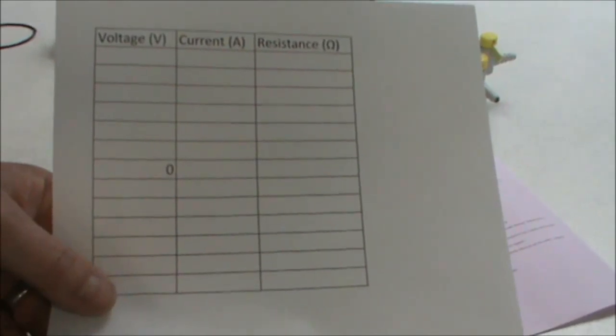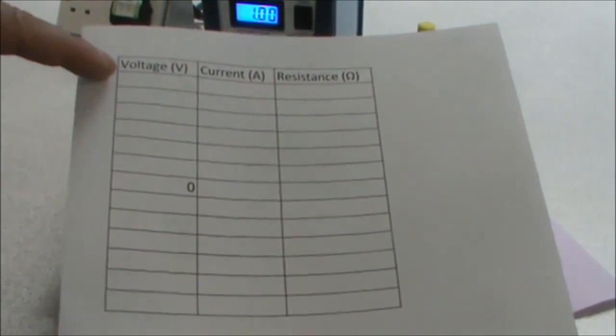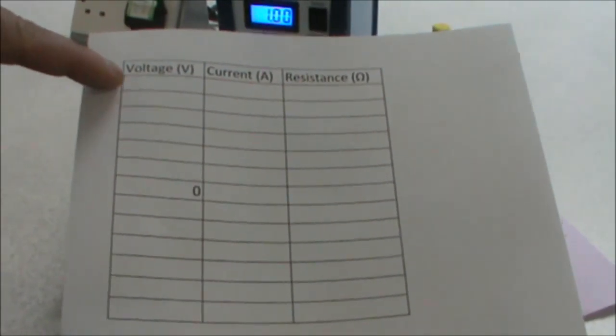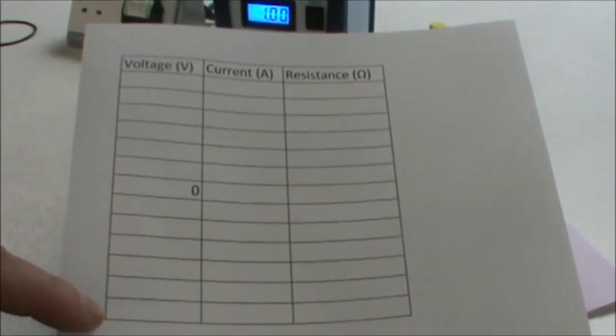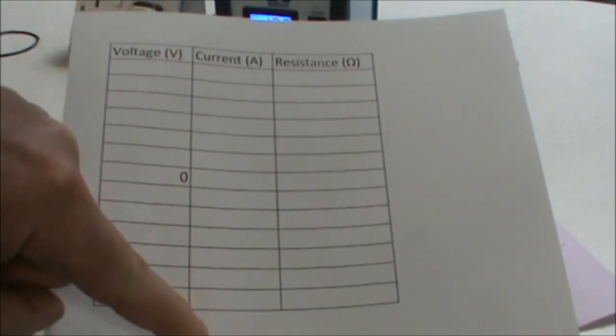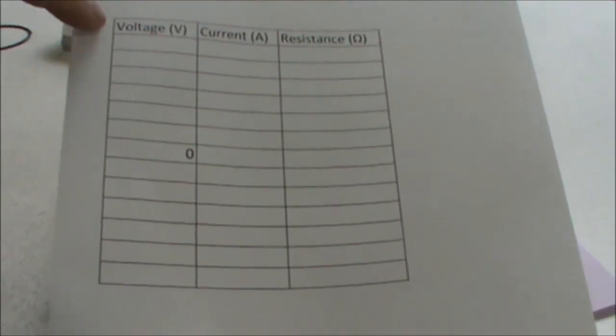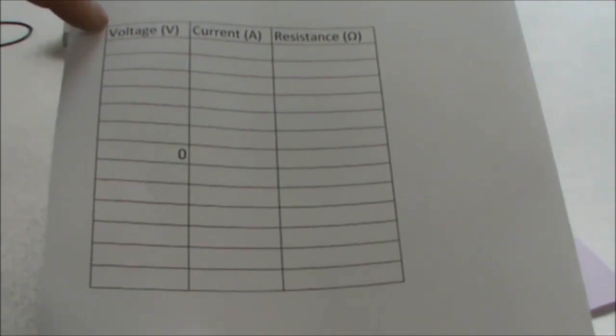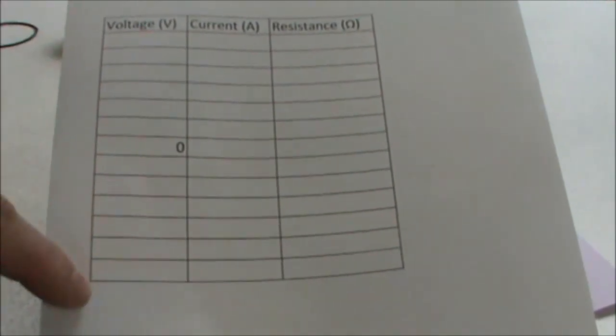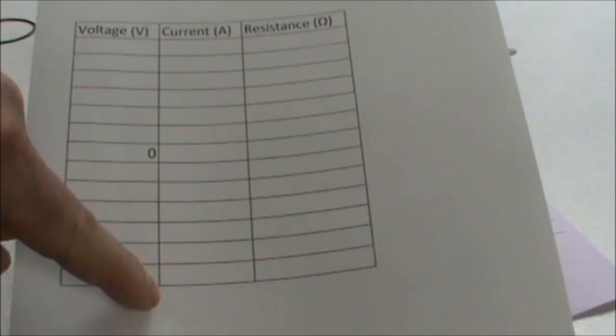I have here a pre-prepared results table that will allow me to record the voltage, and I'm going to go from negative six volts to positive six volts with a zero voltage reading. I will record the current, and I will then calculate the resistance. Remember, the voltage, as it is in the first column, is my independent variable. My current, the one that I am measuring, is the dependent variable.